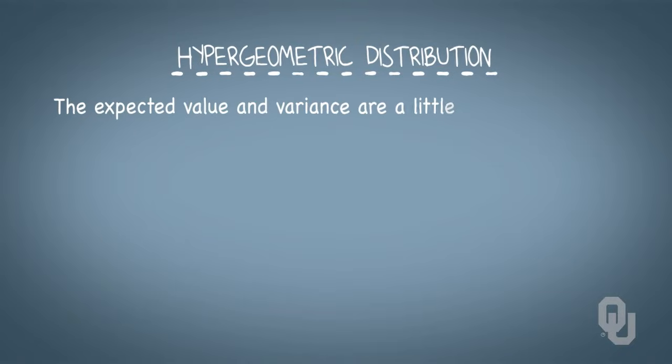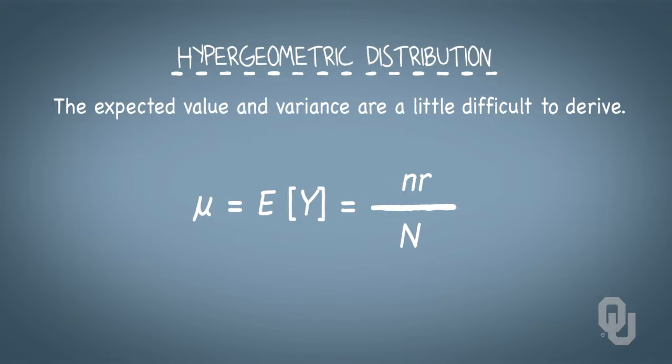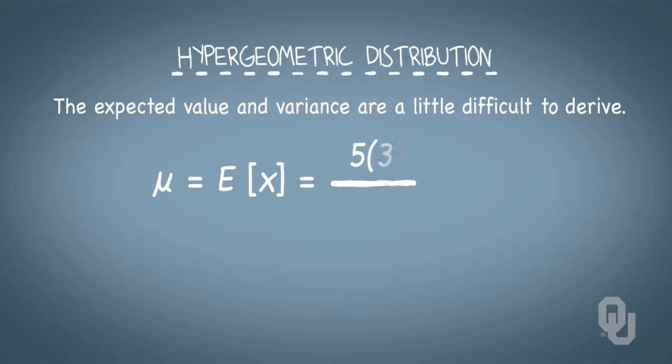The expected value and variance are a little difficult to derive, so we'll just show the punchline. The expected value is N times R divided by capital N. In our committee example, the expected value of random variable X would be 5 times 3 divided by 9, or 1.67 chemists.